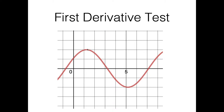Let's consider this graph here. Before we do anything, let's quickly establish where our extreme values are. We have one up here — that's going to be a max — and one down here — that's going to be a min. We've also established that at both of these points, we have a flat tangent line, meaning the first derivative is equal to zero.